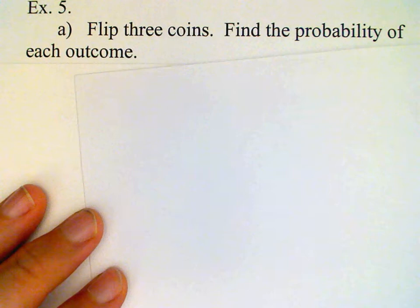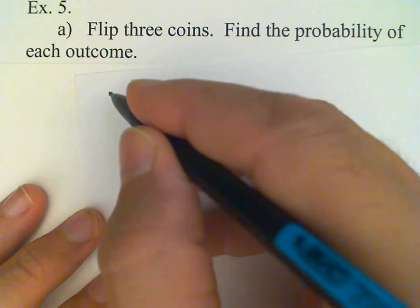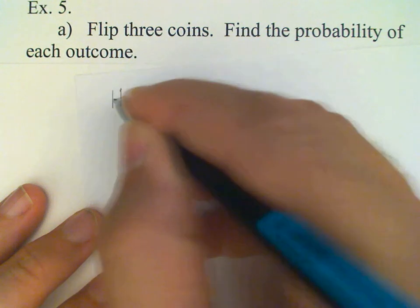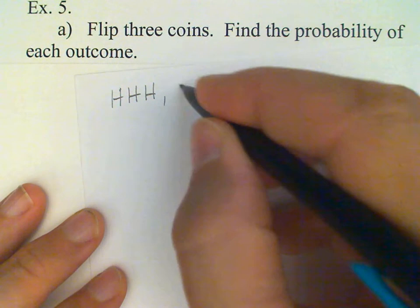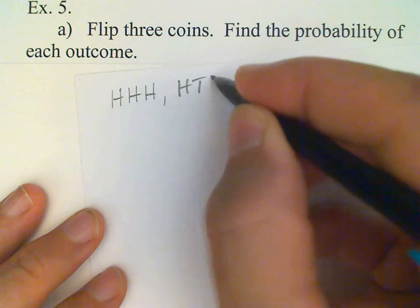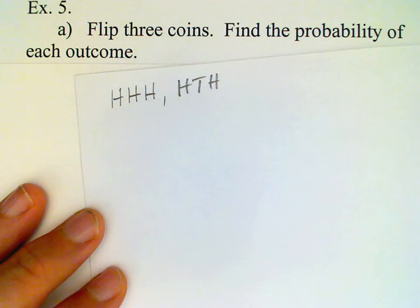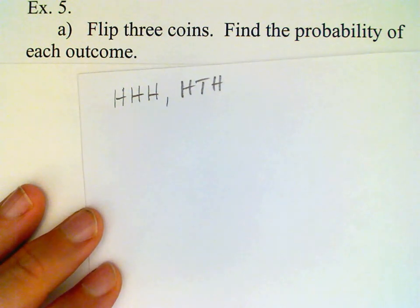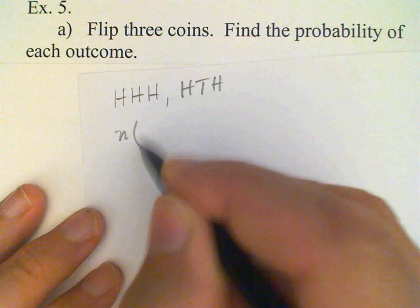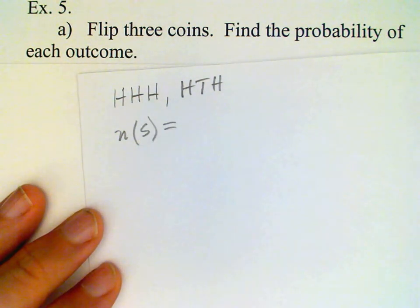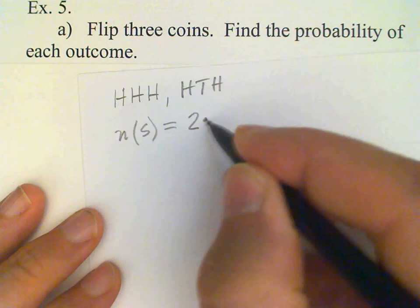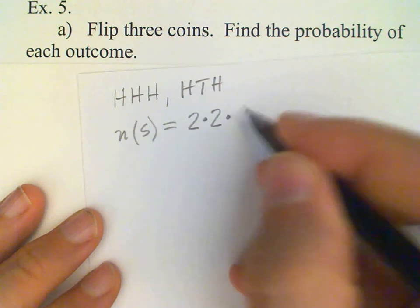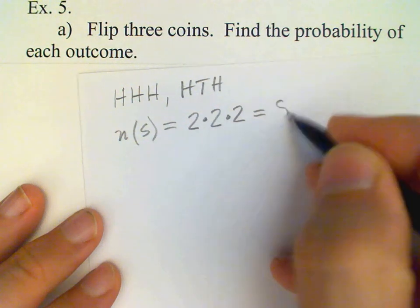So in this experiment, let's say we're flipping a nickel, a dime, and a quarter. Then we get outcomes such as head, head, head, or head, tail, head where the first is the result of the nickel, the second is the dime, and the third is the quarter. And so all we need to do is count how many of these outcomes there are. So the number in the sample space then. And we find this by counting the number of outcomes for each coin, multiplying them together according to the fundamental principle of counting. And so that gives us two times two times two, which is eight.